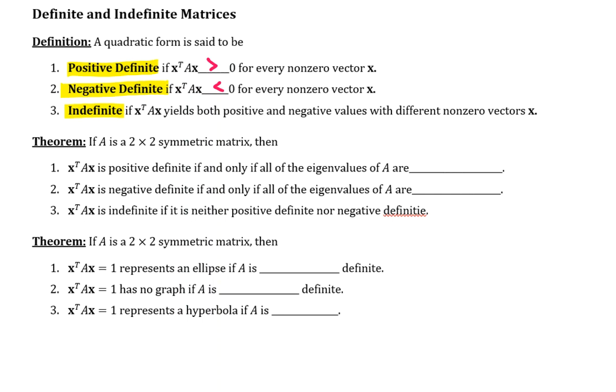So basically that's saying if you pick a vector X and it gives you a positive value X transpose AX, and you pick a different vector X and it gives you a negative value from the product X transpose AX, then we say the quadratic form is indefinite.